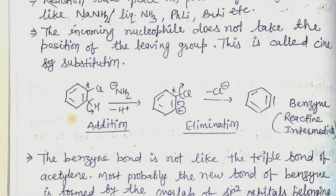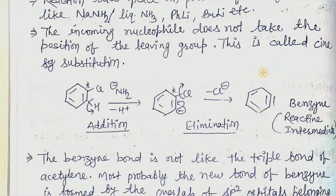If the ortho hydrogen is not present or not available then the reaction will not take place. This mechanism is also known as the elimination-addition reaction. During the first step, one proton is detached by the amide and we get a carbanion. In the second step, this carbanion forms the intermediate known as benzyne.